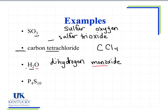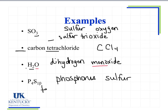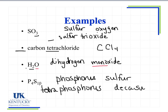The last example we're going to look at is P4S10. I'm going to write down my elements: I have phosphorus and sulfur. I see I've got a four, so that means I need the prefix 'tetra' — tetraphosphorus, all one word. And then I see 10, and the prefix for ten is 'deca.' I change the ending on sulfur to -ide. So I have tetraphosphorus decasulfide, and that's actually the name of my compound.